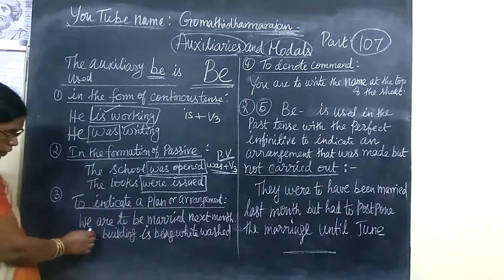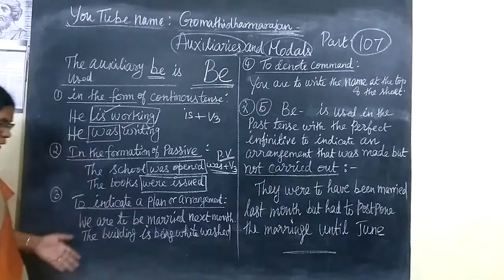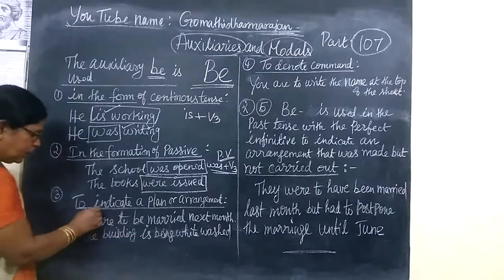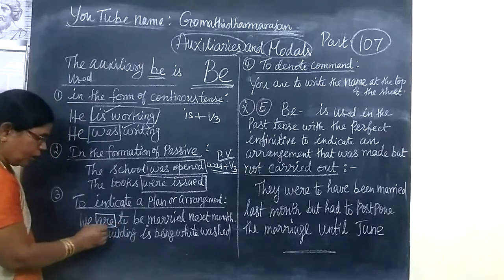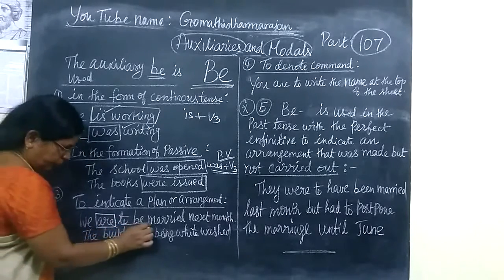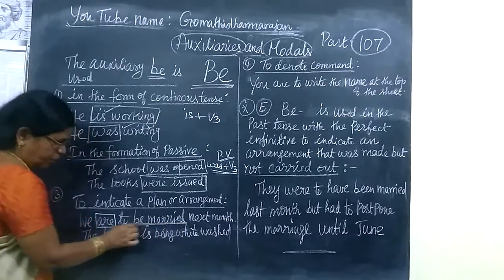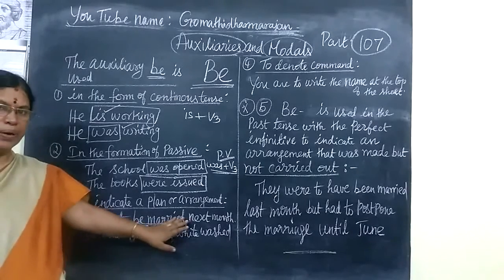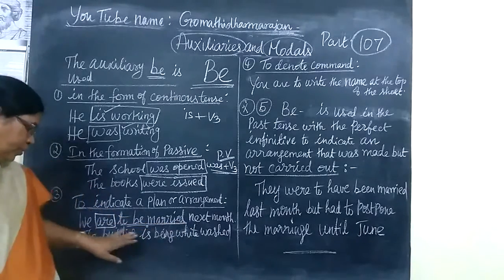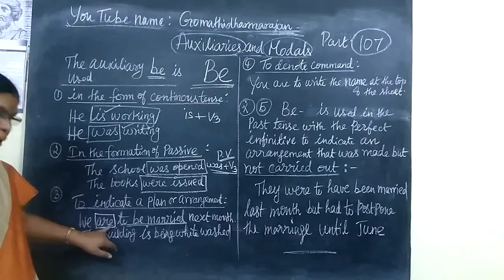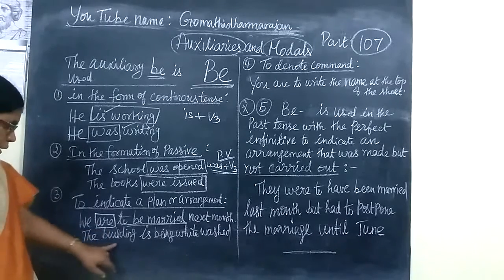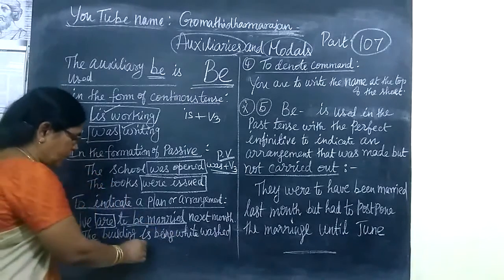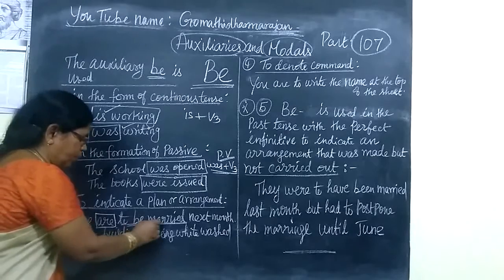For example: 'We are to be married next month.' Here the be-form is used. 'We are to be married' indicates an arrangement. Our arrangement can be formal. Next example: 'We have to be married.' You are using the be-form here. The building is painted white — in that case, we are using the be-form.